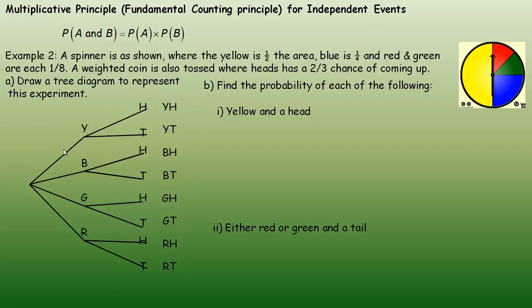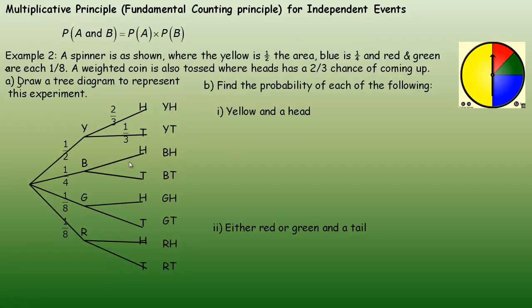Now these probabilities, unlike the previous example, aren't all equal — they're not all equally likely. The yellow is half the area, so the probability of getting yellow is one-half. The probability of getting blue is one-quarter. Red and green are each one-eighth of the area, so both are one-eighth. Since the coin is weighted, the probability of a head is two-thirds and the probability of a tail is one-third — and that applies to all the head and tail branches.